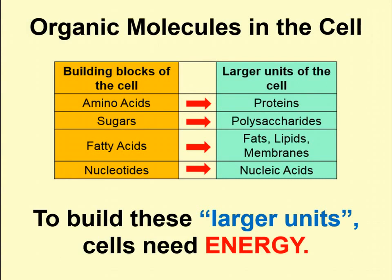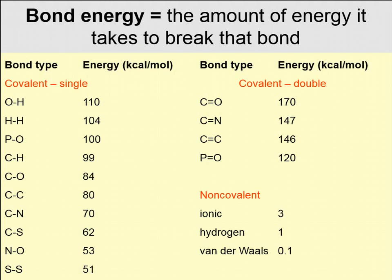Bond energy is the amount of energy it takes to break a bond, measured here in kilocalories per mole. For instance, an O-H bond between oxygen and hydrogen contains 110 kilocalories per mole — a pretty strong covalent bond. A double bond between carbon and oxygen has 170 kilocalories per mole. Non-covalent interactions such as hydrogen bonds have only 1 kilocalorie per mole, so they're much weaker.